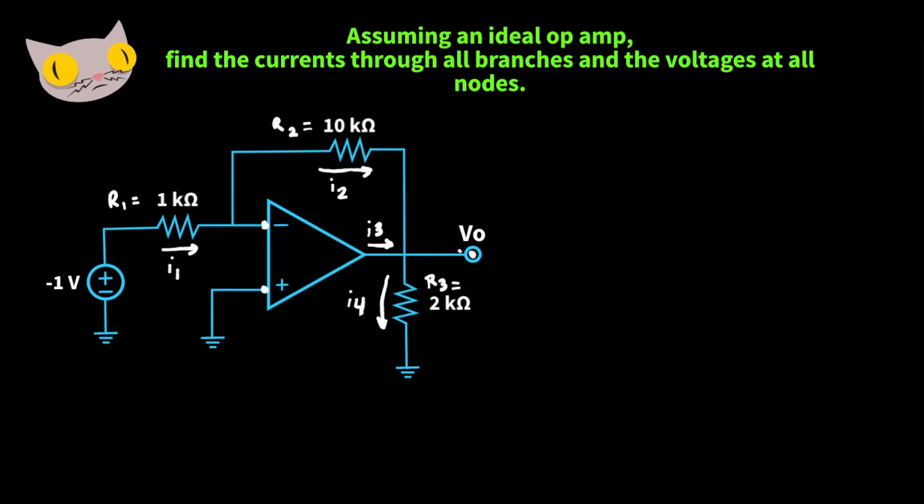Because this op amp is an ideal op amp, the voltages at the inverting and the non-inverting terminals are going to be the same and they're going to be equal to zero volts. Now this op amp is operating in an inverting configuration. We know this because the voltage source is going into the negative terminal of op amp.